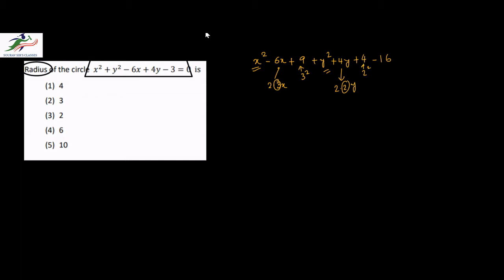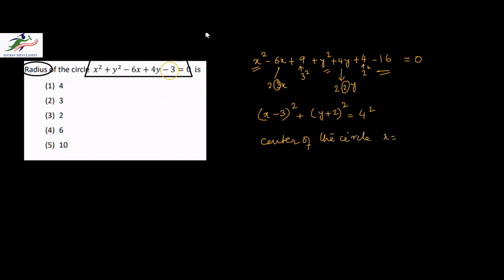So 9 plus 4 is 13, and I have minus 3 here, so I have to subtract 16 to make it minus 13 overall, so this is equal to 0. Therefore x minus 3 whole squared plus y plus 2 whole squared is equal to 4 squared, since 16 can be written as 4 squared. So therefore the center of the circle will be x equal to 3 and y equal to minus 2, and the radius of the circle will be equal to 4. So option 1, 4, is the correct choice.